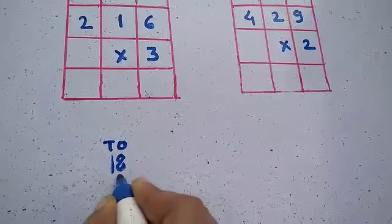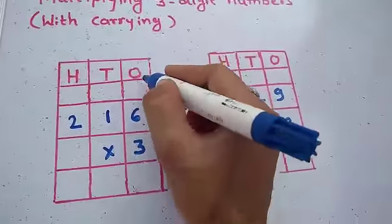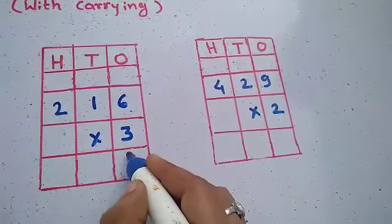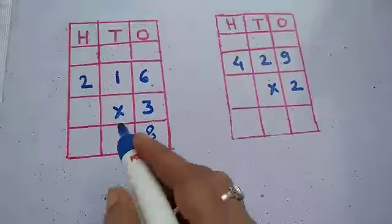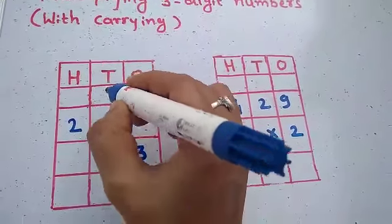Now 18 is 1 ten and 8 ones. So 8 ones right here in ones column. Now 1 ten carry forward in tens column.